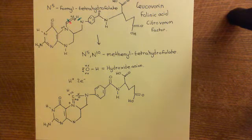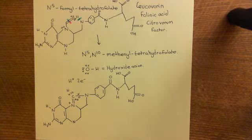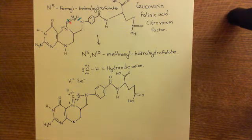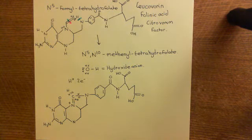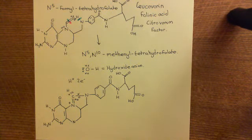So basically, if you give leucovorin, it will allow cells to produce N5N10-methylene-tetrahydrofolate in a different mechanism that does not require the activity of dihydrofolate reductase. This will allow you to synthesize thymidine monophosphate again, because N5N10-methylene-tetrahydrofolate is the substrate for the thymidylate synthase enzyme. The amount of leucovorin given will not completely restore thymidine monophosphate synthesis — it restores it to a tiny little level.